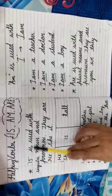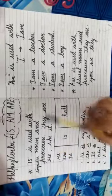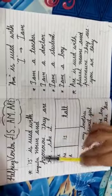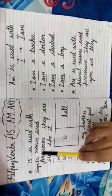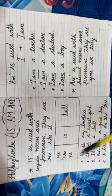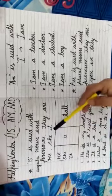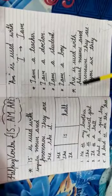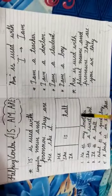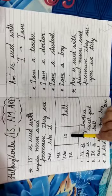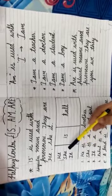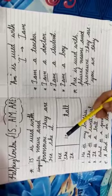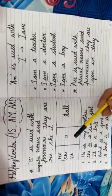Is. Is is used with singular nouns and pronouns. They are he, she, it. Here singular noun means one person, one place, one animal and one thing. And pronouns are he, she, it. You have to keep it in your mind that is is always used with he, she, it and singular noun — one person, place, animal, thing.